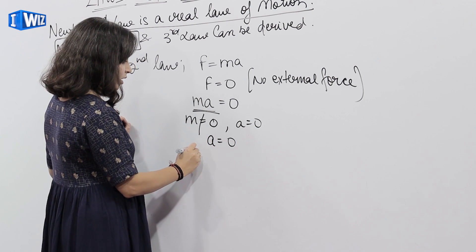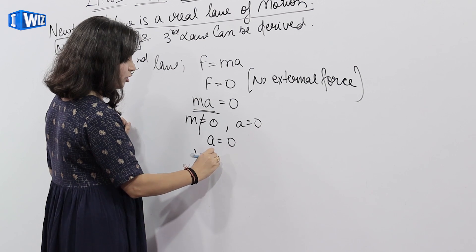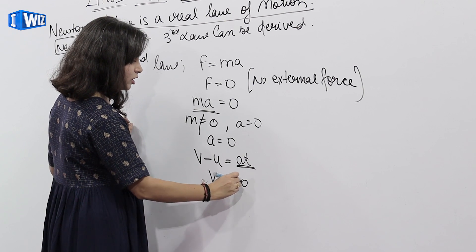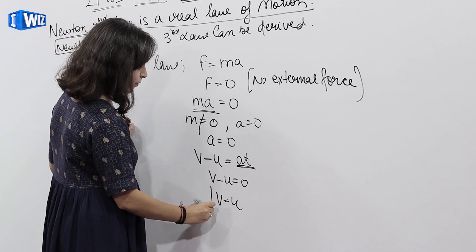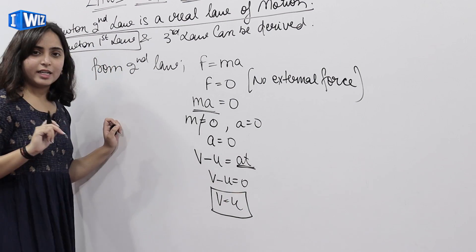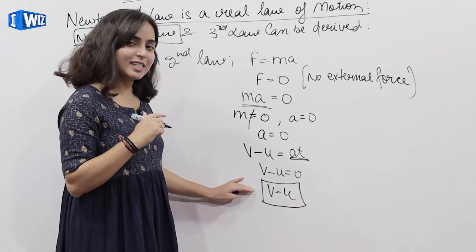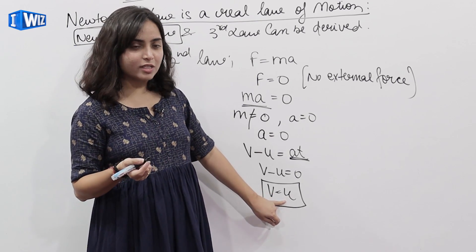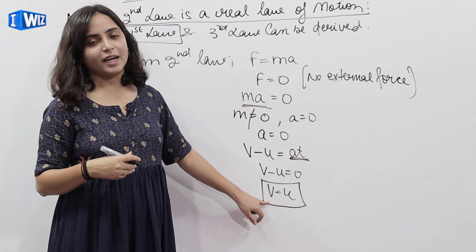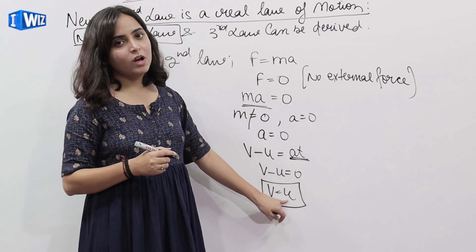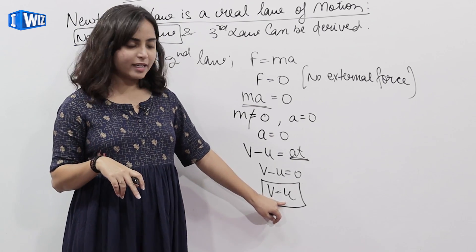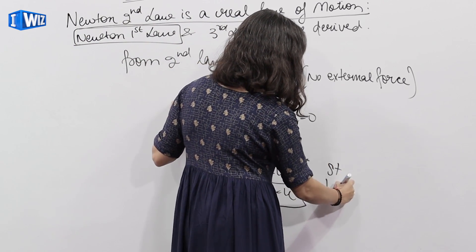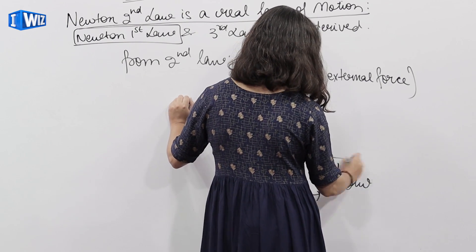Acceleration zero होगा. Now we know v minus u equals AT — acceleration zero, so v minus u equals zero, therefore v equals u. That means final velocity equals initial velocity. अगर particle rest की state में है तो initial velocity zero, तो rest की state में ही रहेगा unless until external force is applied. अगर particle motion में है with initial velocity u, तो motion में ही रहेगा — final velocity same as initial velocity. This is my first law, derived from the second law.